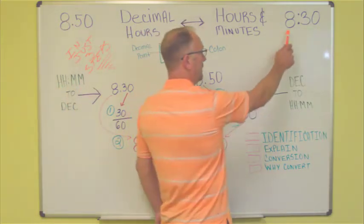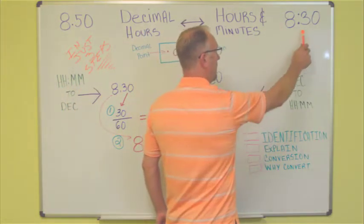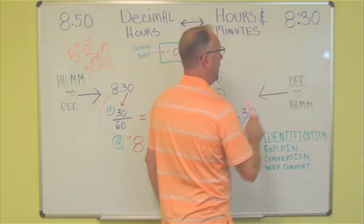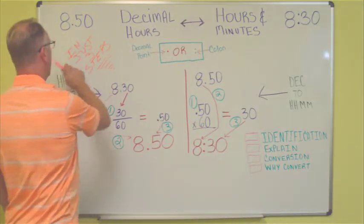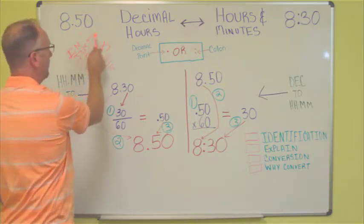Hours and minutes, this is the hours part. So, 8 hours and 30 minutes. Whenever we see that, we know it's 8 and 30 minutes. Whenever we see the decimal, we know it's 8 and .5, a fraction of an hour.